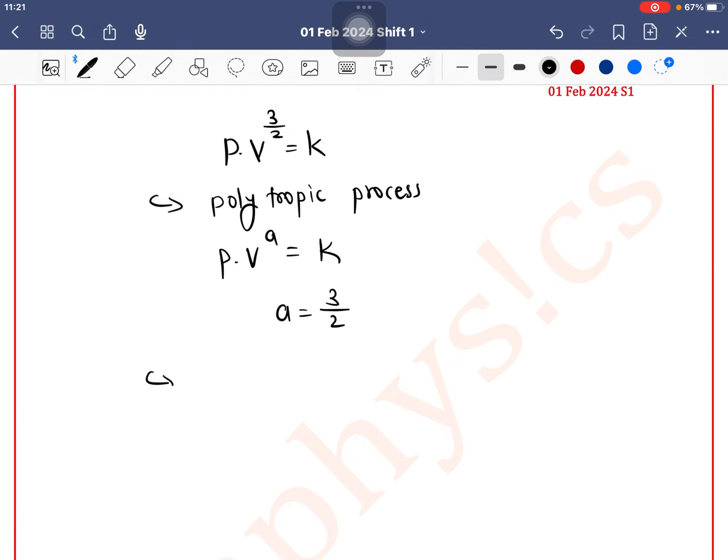And for polytropic process, work done is equal to P2 V2 minus P1 V1 divided by 1 minus A.